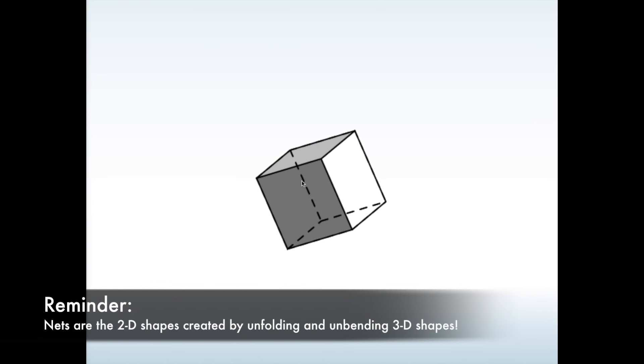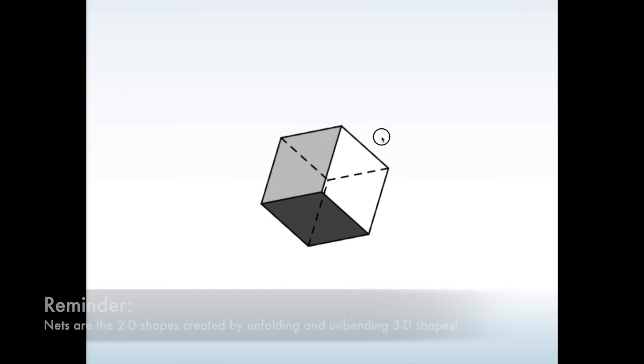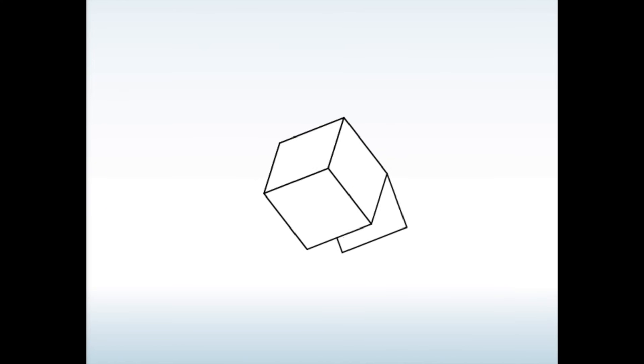If I turn this into a net, what it's basically going to do is unfold each of these faces on this 3D object at each edge. So it's just going to unfold it and you'll see what the 2D or the net of this cube would look like. It's going to look something like this.